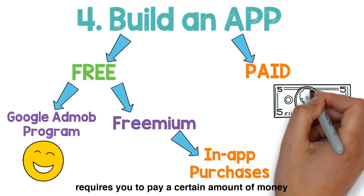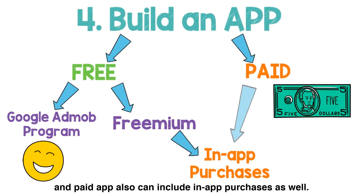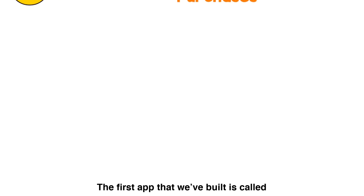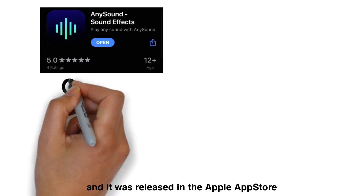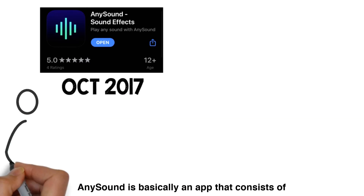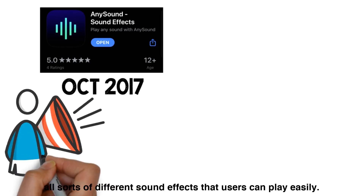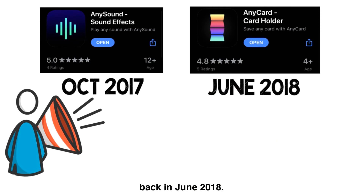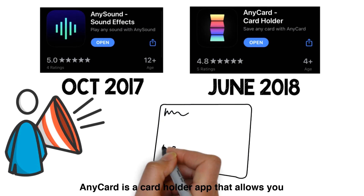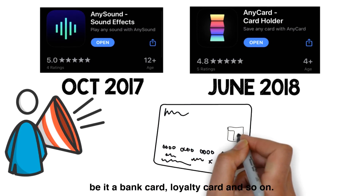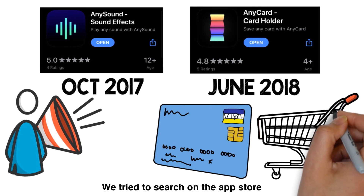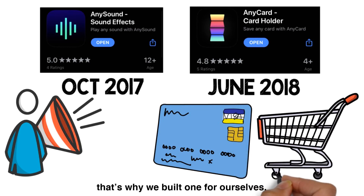Paid apps require you to pay a certain amount of money before you can download, and they can also include in-app purchases. Now let me show you the apps that we have built previously. The first app is called AnySound Sound Effects app, released in the Apple App Store back in October 2017. AnySound consists of all sorts of sound effects that users can play easily. After that, we worked on AnyCard Cardholder app, released in June 2019. AnyCard lets you store any sort of card — a bank card, loyalty card, and so on. We built it because we kept forgetting to bring our loyalty cards when shopping.